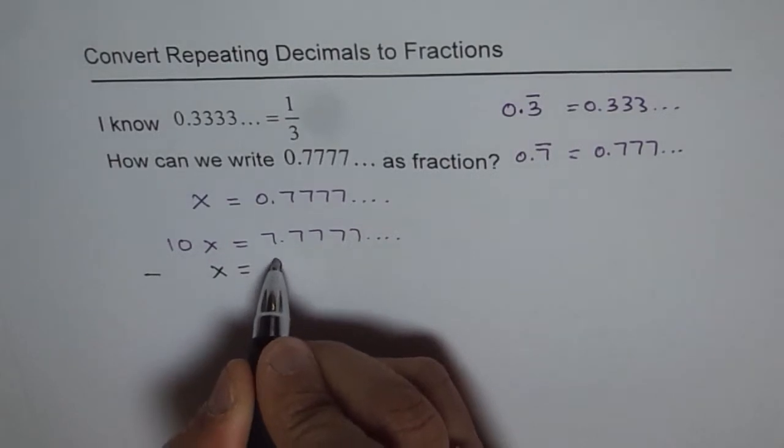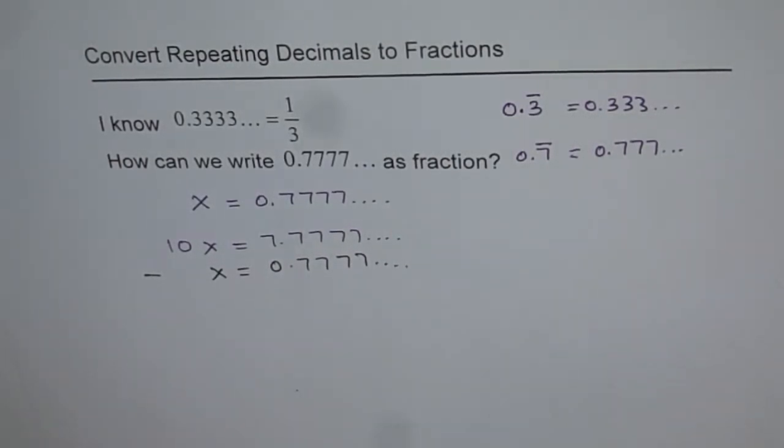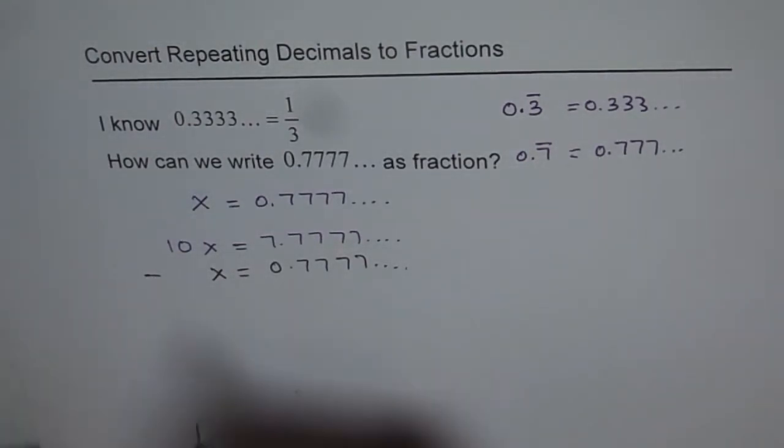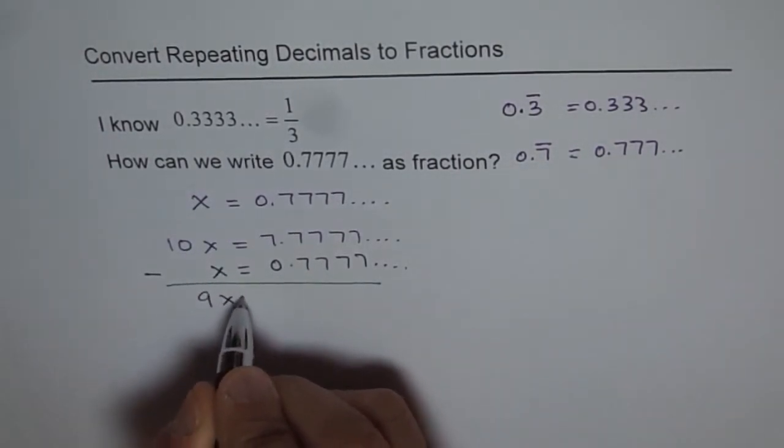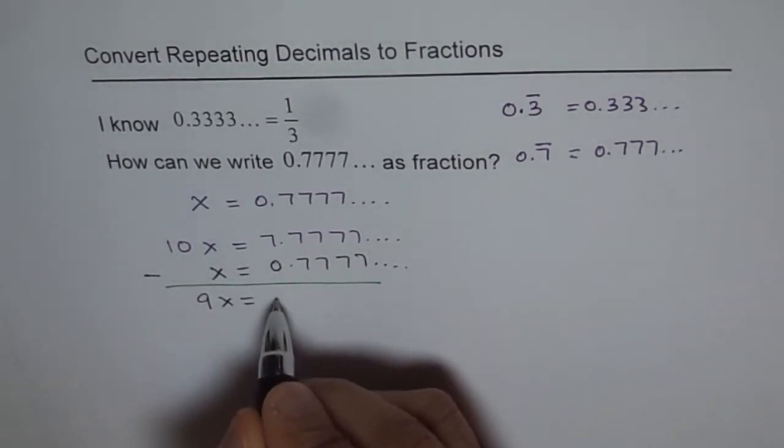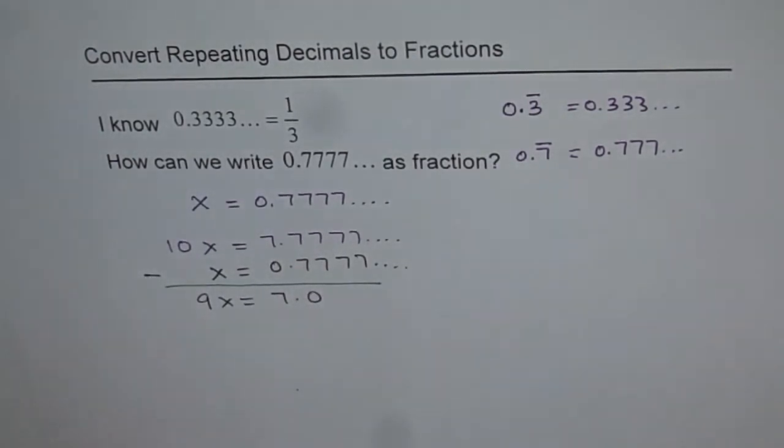If I take away 0.77777, what do I get? That is what is very interesting to see. I just get 10x minus x is 9x equals to 7 minus 0 is 7 and all these things vanish and I get just a 0 there. So that is the technique.